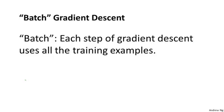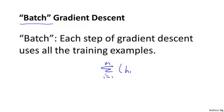Finally, just to give this another name: the algorithm we just went over is sometimes called batch gradient descent. In machine learning, the term 'batch gradient descent' refers to the fact that in every step of gradient descent, we're looking at all of the training examples. When computing derivatives, we compute a sum that goes over all m training examples — we're looking at the entire batch of training data.